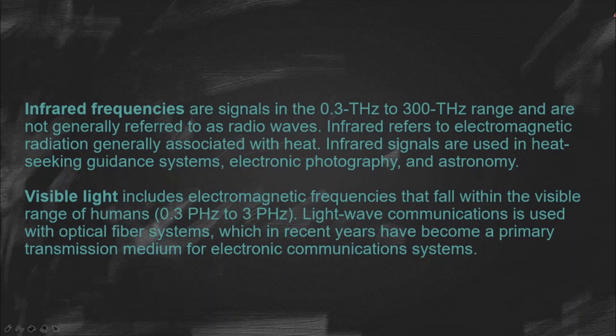Next to the radio frequency, we have the infrared frequencies which are signals in the 0.3 GHz to 300 GHz range and are not generally referred to as radio waves. Infrared refers to electromagnetic radiation generally associated with heat. Infrared signals are used in heat-seeking guidance systems, electronic photography, and astronomy.